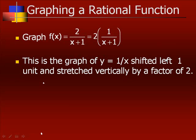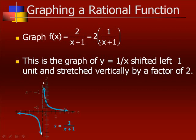Now let's graph a rational function. If we wanted to graph f of x equals 2 over (x + 1), we can rewrite that as 2 times 1 over (x + 1). This goes back to shifting and stretching. The x plus 1 means we shift it to the left one place, and the 2 out front means we stretch it vertically by a factor of two. Taking our earlier graph and shifting it moves the axes over one place, then we stretch it — we could also just punch it into the calculator.